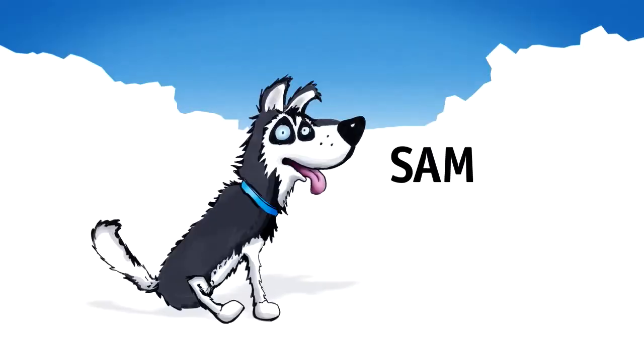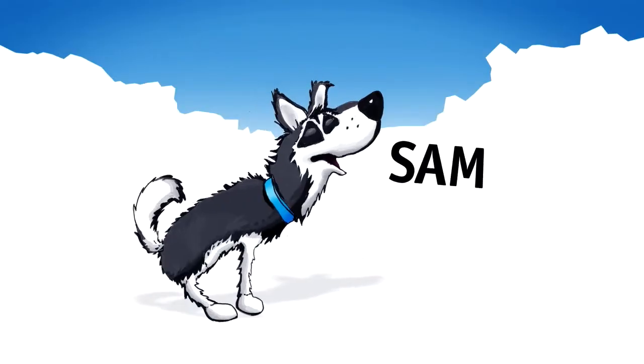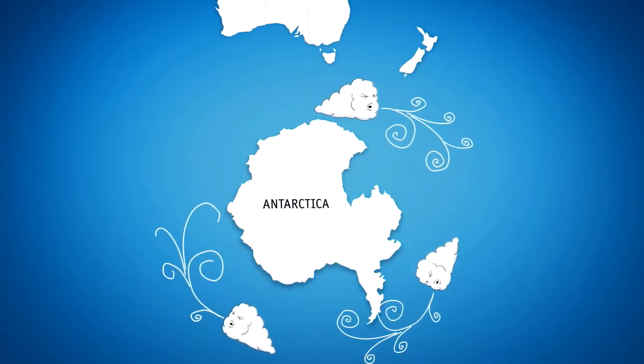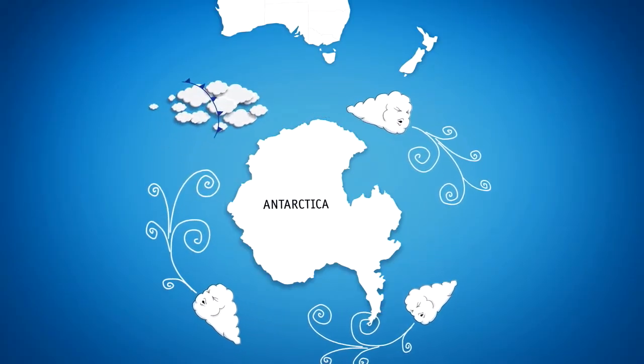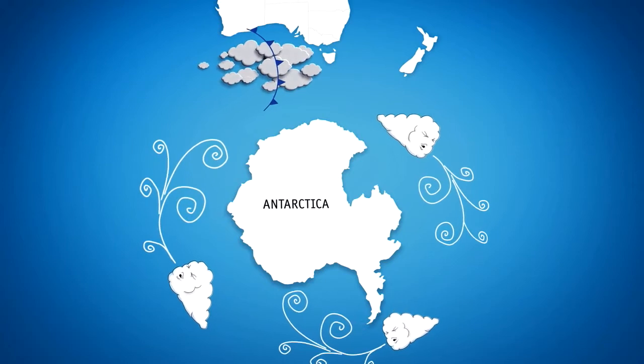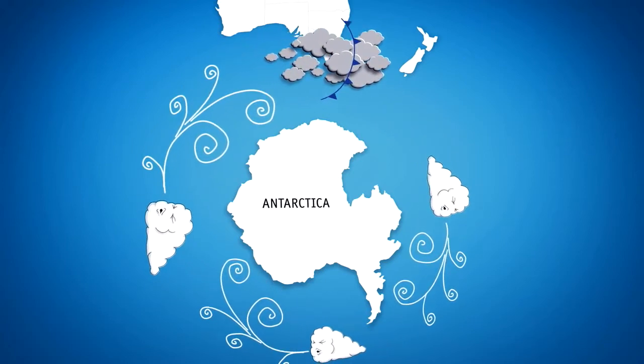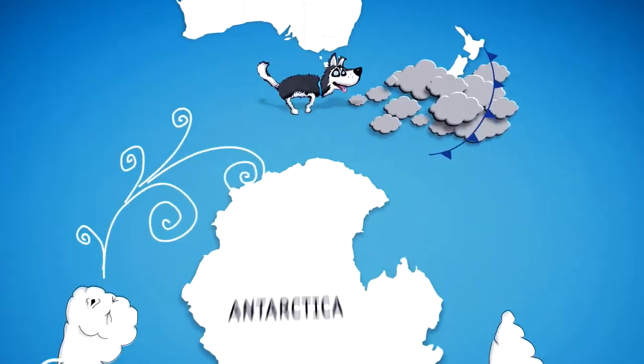Meet Sam. Sam herds cold fronts up from the Southern Ocean, a significant source of rain for Southern Victoria. If we take a look at the Southern Ocean, we can see westerly winds circling around Antarctica, throwing out cold fronts of stormy wet weather. The strength and position of these winds is known as the Southern Annular Mode, or Sam.